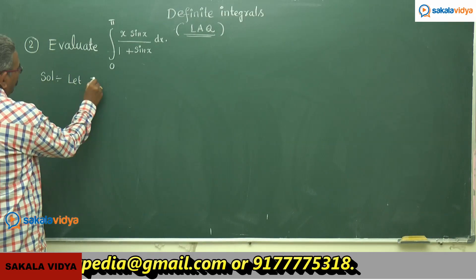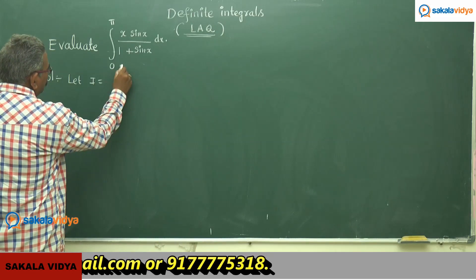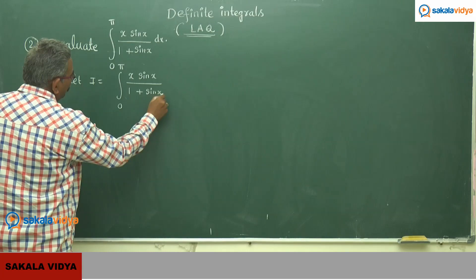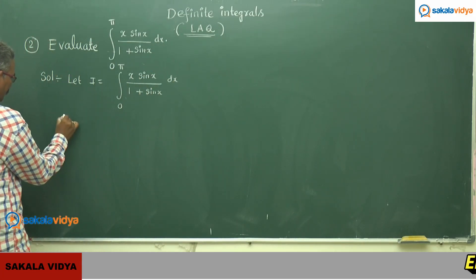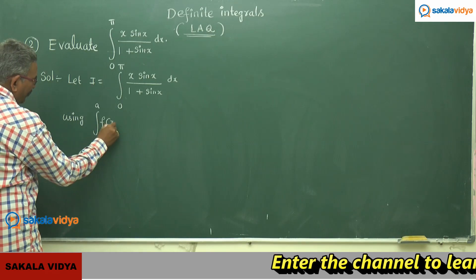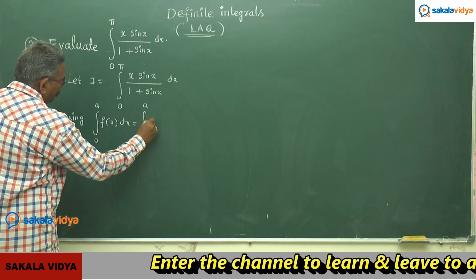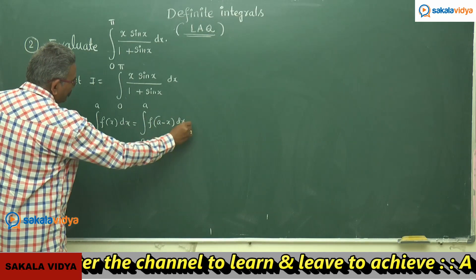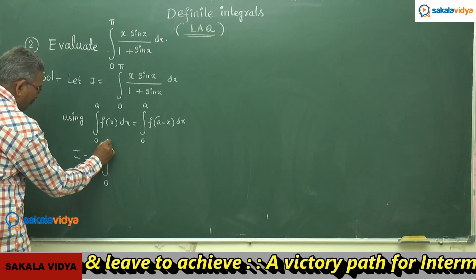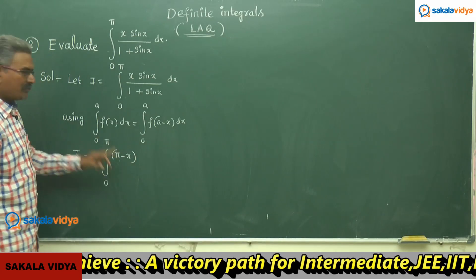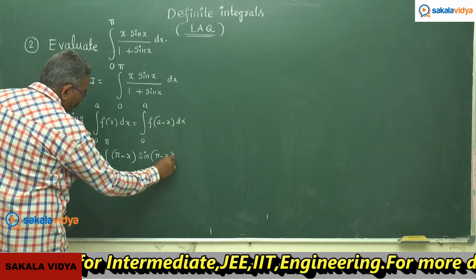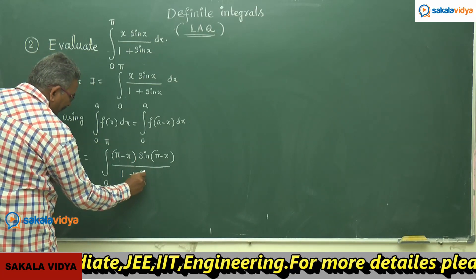Let I equal to integral 0 to π of x sin x by 1 plus sin x dx. Using the property integral 0 to a of f(x) dx equals integral 0 to a of f(a minus x) dx, I can be written as integral 0 to π with x replaced by π minus x.